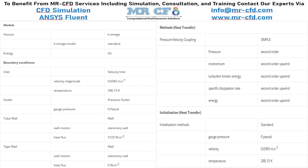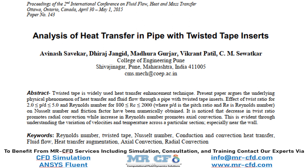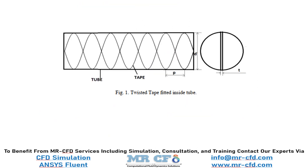A summary of the different settings and setup used in this project is presented. You can obtain the mesh file and also the full training movie by purchasing this product. In this slide you can see figure 1 of the paper, which shows the twisted tape pipe model. In the present validation project, the value of the ratio of the pitch of the twisted strip to the diameter of the tube is equal to 5.